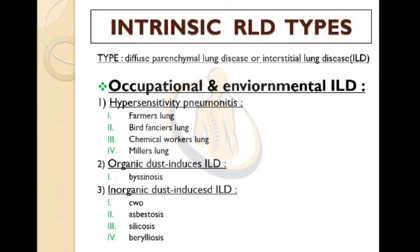After completing extrinsic, we will look into intrinsic RLD types. These have two basic types: interstitial lung diseases and non-interstitial lung diseases. Type 1 is diffuse parenchymal lung diseases or interstitial lung diseases (ILD). This includes occupational and environmental ILD, with subtypes: hypersensitivity pneumonitis — farmer's lung, bird fancier's lung, chemical worker's lung, and miller's lung.